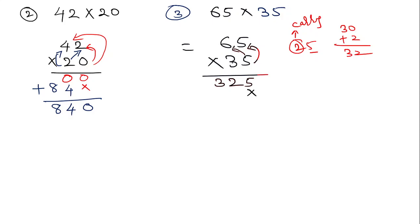Then I take 3 and multiply this 3 to 5. This is 5. 3 times 5 is 15. I write here 5 first and take 1 as a carry. Then I write 3 times 6 is 18 plus this carry 1. I write here 19. So I write here 9 and 19.